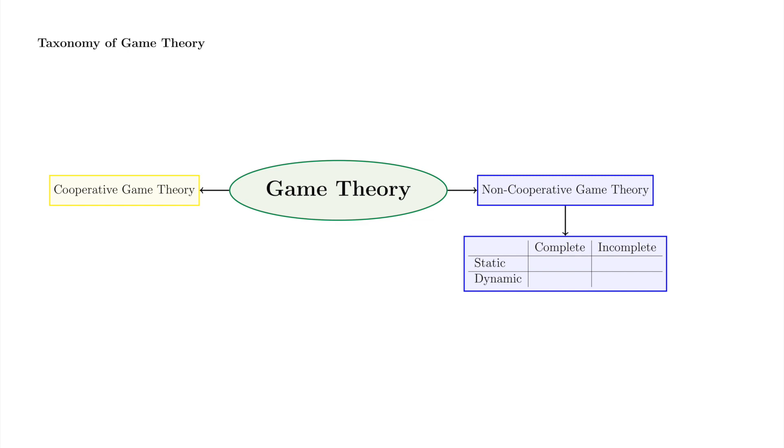We'll begin by exploring static games of complete information and contrasting them with other types of games. Here's the taxonomy of game theory again. We said we'd study static games of complete information, dynamic games of complete information, and static games of incomplete information.